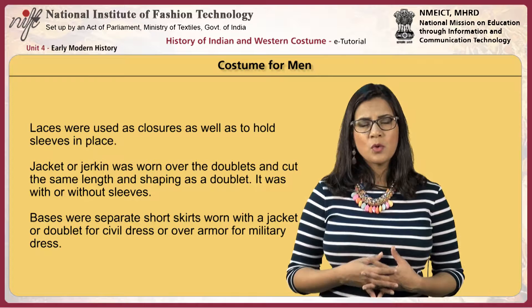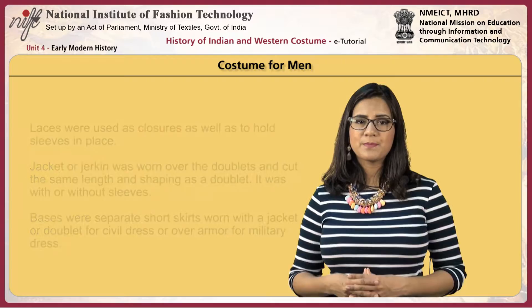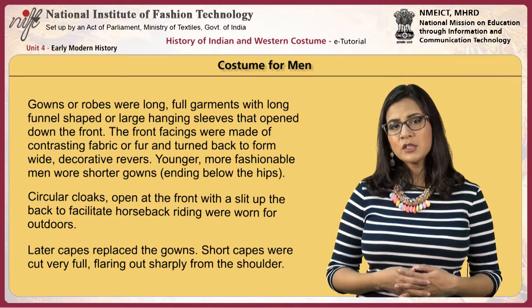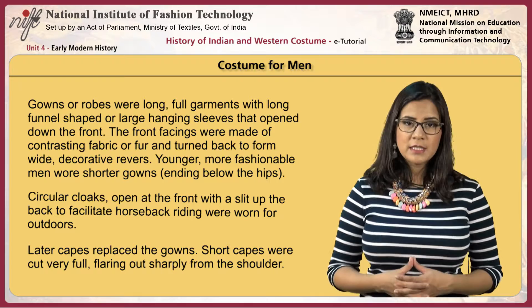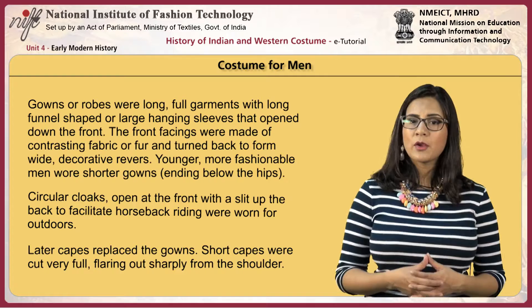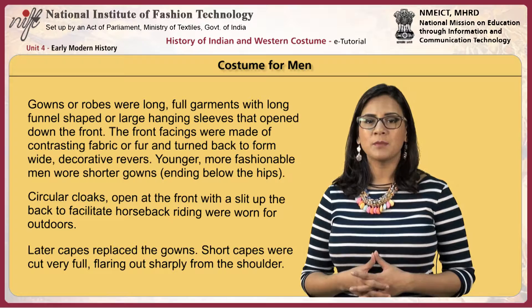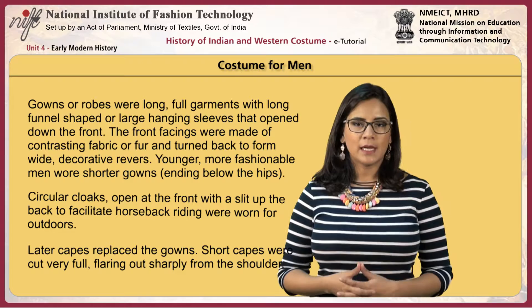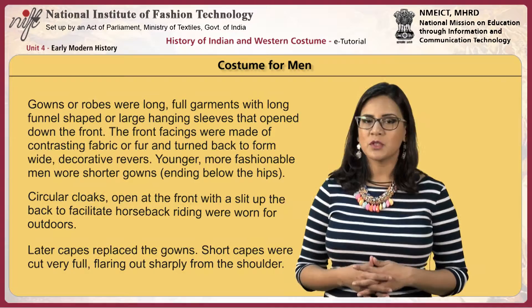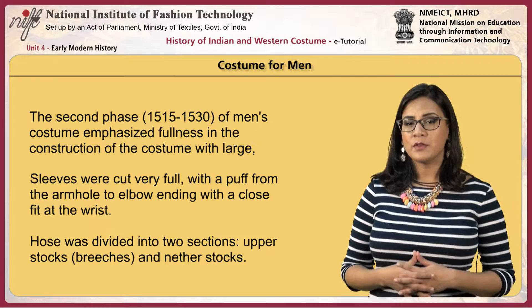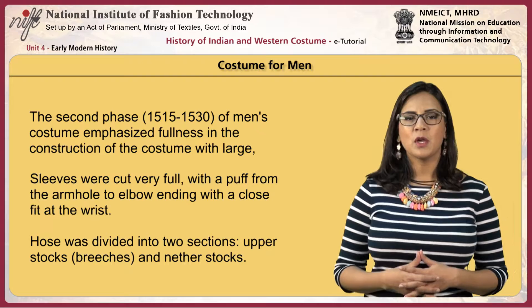Gowns or robes were long, full garments with long funnel-shaped or large hanging sleeves that opened down the front. The front facings were made of contrasting fabric or fur and turned back to form wide decorative revers. Younger, more fashionable men wore shorter gowns ending below the hips. Circular cloaks, open at the front with a slit up the back to facilitate horseback riding, were worn for outdoors. Later, capes replaced the gowns. Short capes were cut very full, flaring out sharply from the shoulder. The second phase from 1515 to 1530 of men's costume emphasized fullness in construction with large, bulky, puffed areas, decorative slashings or panes with contrasting linings.